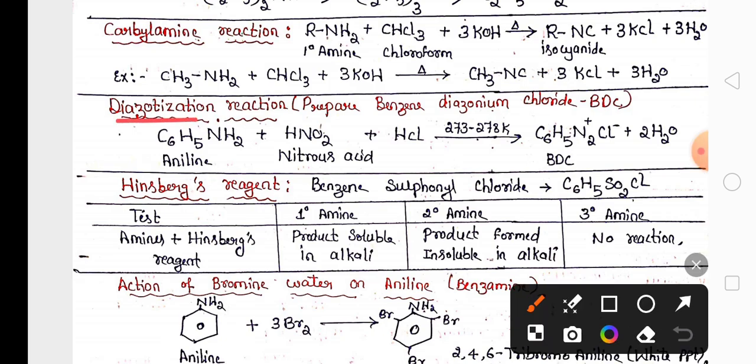Then diazotization reaction is important where aniline reacts with nitrous acid and HCl at 0 to 5 degrees Celsius to produce benzene diazonium salt.